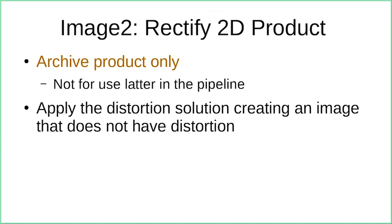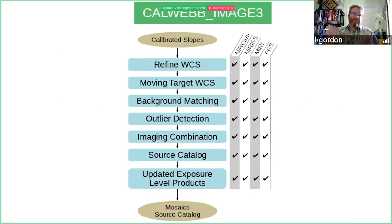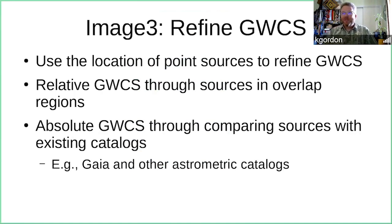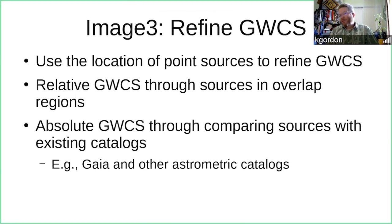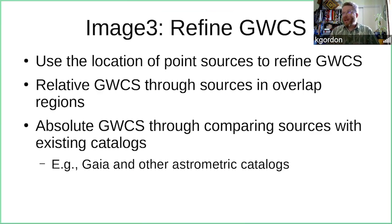Image three combines groups of images together to get better data and make mosaics. The first step is to refine the world coordinate system: using point sources in the images, we update the observatory pointing information. This is done first by updating the relative WCS through sources in overlap regions — finding all sources, checking for shifts needed to align them. Then an absolute update is performed by comparing sources in the images to astrometric catalogs, especially Gaia, ensuring very fine relative and absolute coordinates for all images.